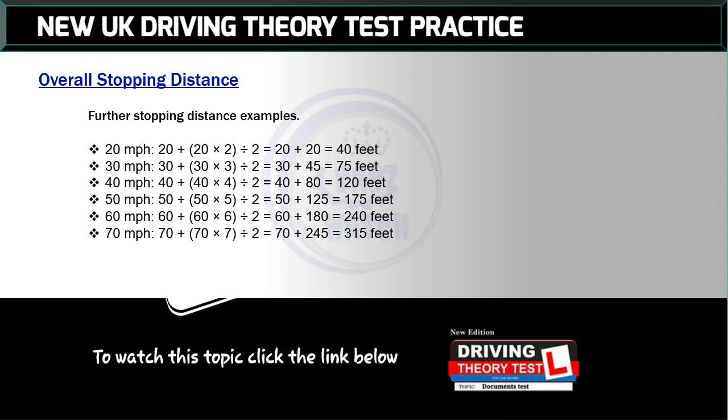40 miles per hour: 40 plus (40 × 4 ÷ 2) = 40 + 80 = 120 feet. 50 miles per hour: 50 plus (50 × 5 ÷ 2) = 50 + 125 = 175 feet. 60 miles per hour: 60 plus (60 × 6 ÷ 2) = 60 + 180 = 240 feet. 70 miles per hour: 70 plus (70 × 7 ÷ 2) = 70 + 245 = 315 feet.